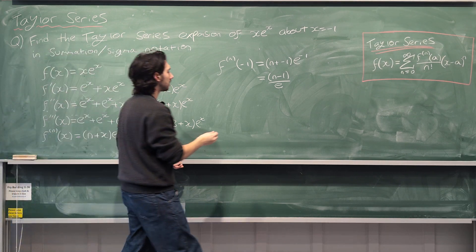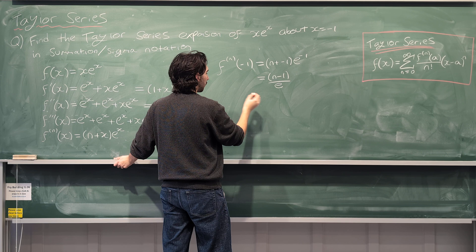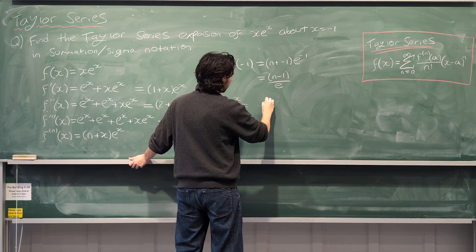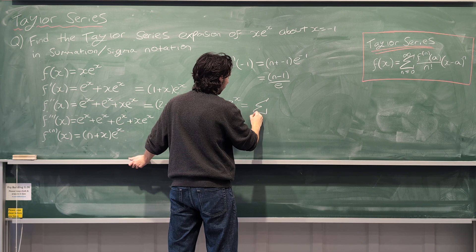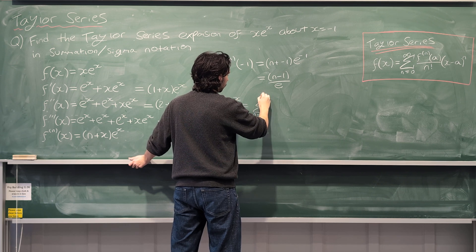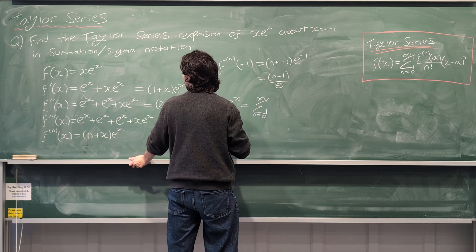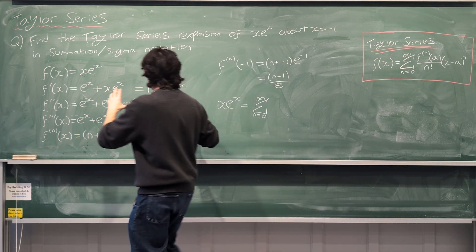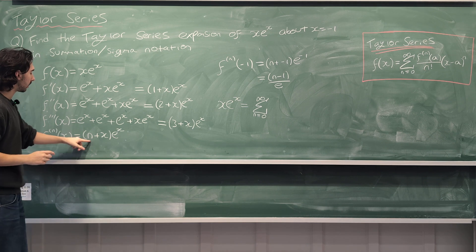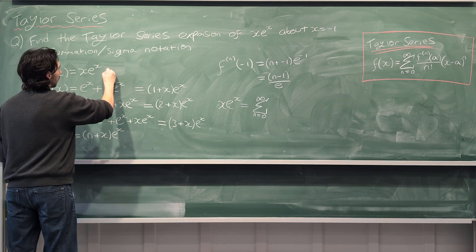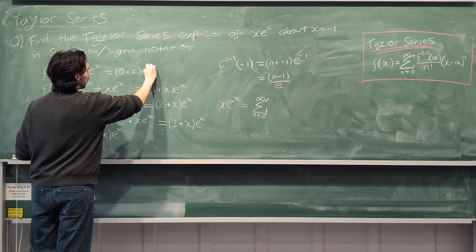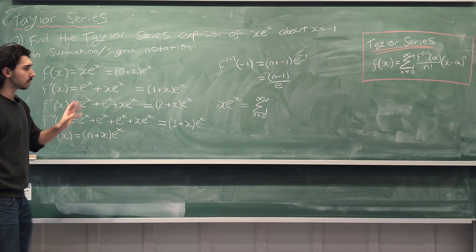And then we just plug this into the sigma notation. So we have f(x), which is xe^x, is the sum from n equals 0 to infinity, because by the way, this also works for when f(x) is 0. This formula that we have, this works including when n is 0, because we can write this as 0 + x times e^x. So it does work for every single term. You've got to make sure that it does, because sometimes it doesn't.